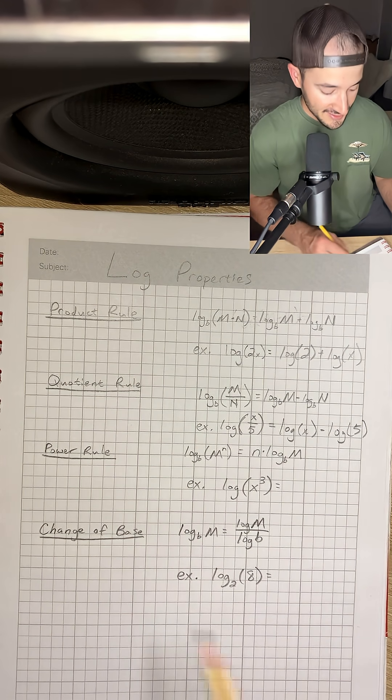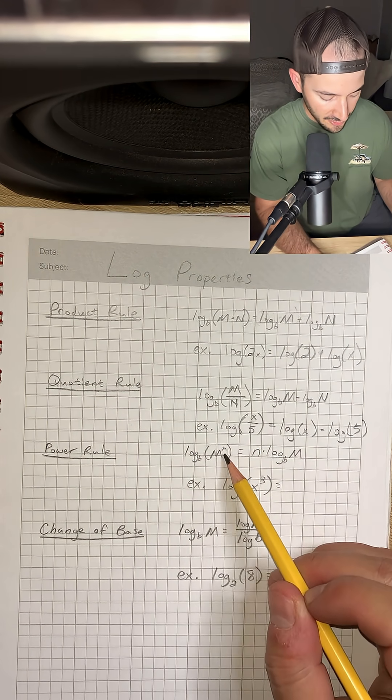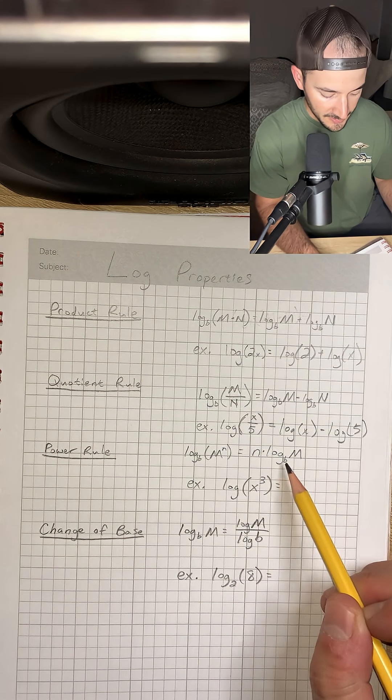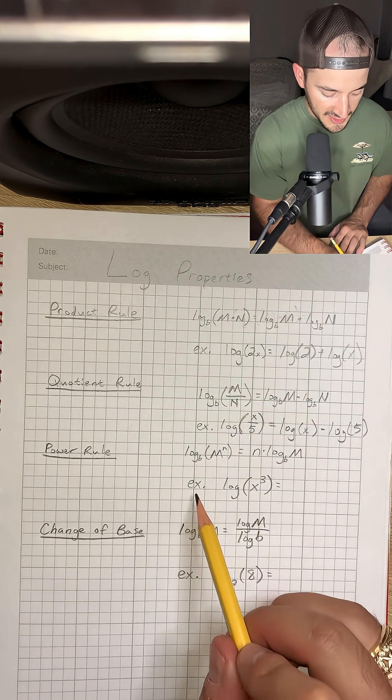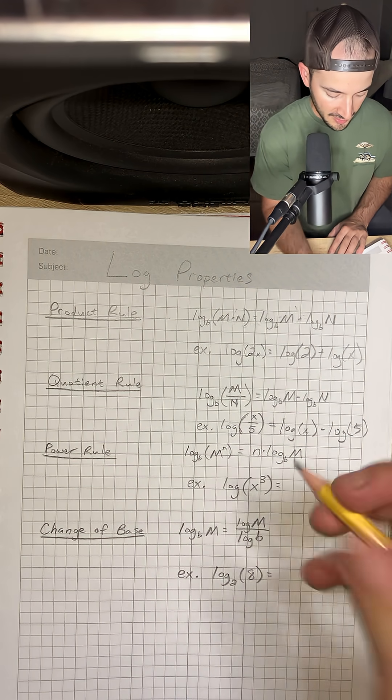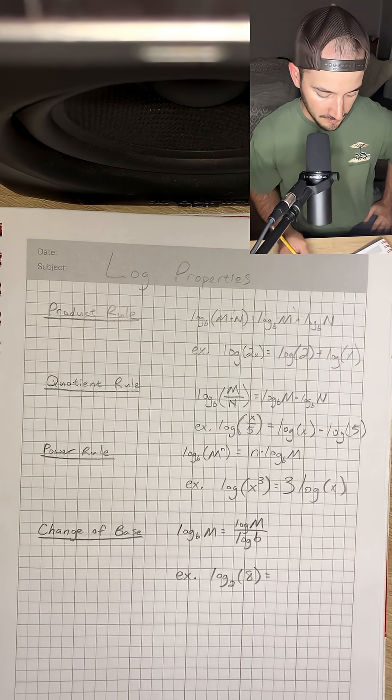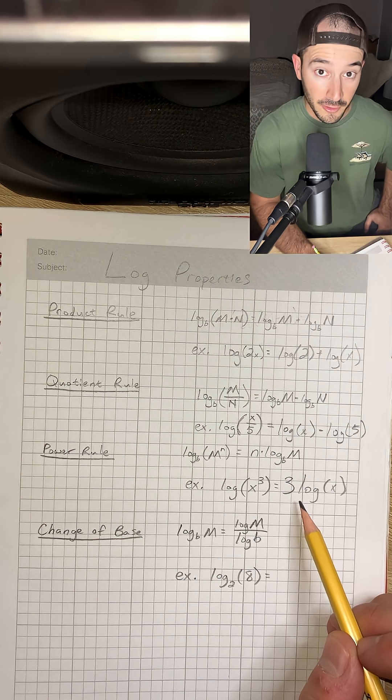Next, the power rule. Log base b of m to the nth power is equal to n times log base b of m. For our example, we have log of x to the third power, and we can rewrite that as 3 times log x. So that exponent just gets moved in front of the logarithm.